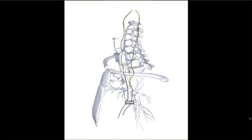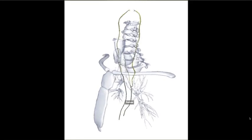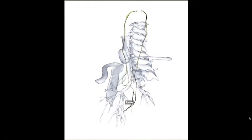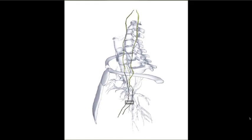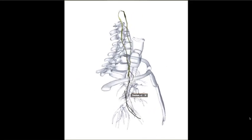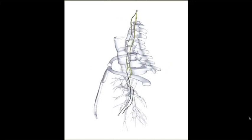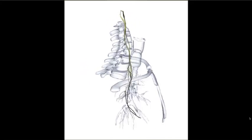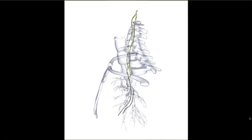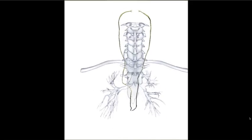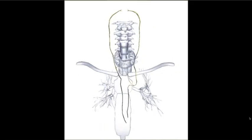Concerning the innervation of the trachea, it is supplied by the vagus nerve. Around the trachea, we can find the recurrent laryngeal nerves, which must be avoided during the procedure. If these nerves are injured, they could lead to vocal cord paralysis.